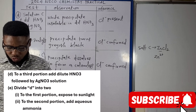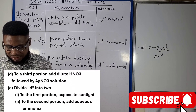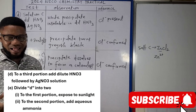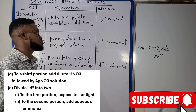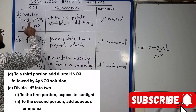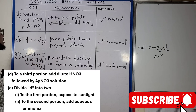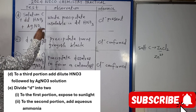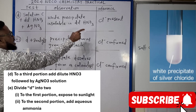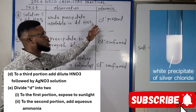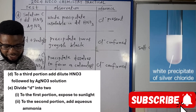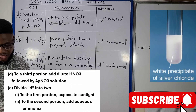Now for the anion test, question D says: to a third portion add dilute HNO₃ followed by silver nitrate. Each time we use silver nitrate we are looking for the presence of chloride ions. Solution C plus dilute HNO₃ plus silver nitrate gives a white precipitate. This precipitate is insoluble in dilute HNO₃, which means chloride ion is suspected or present.